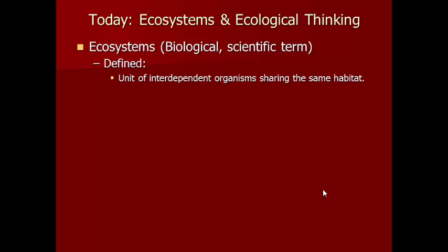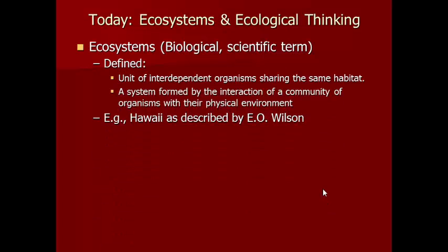From a biological or scientific perspective we can define ecosystems in two ways. One is a unit of interdependent organisms sharing the same habitat. Two is a system formed by the interaction of a community of organisms with their physical environment. The second definition is a little more inclusive because it recognizes the interaction between organisms and the environment, and how those interactions create the dynamic properties of the whole.